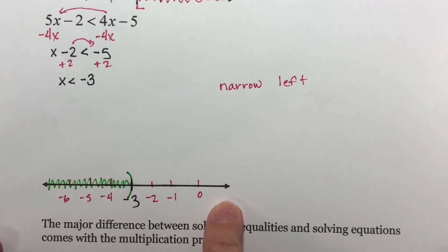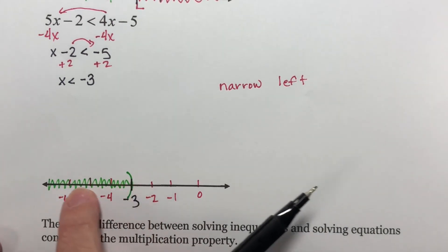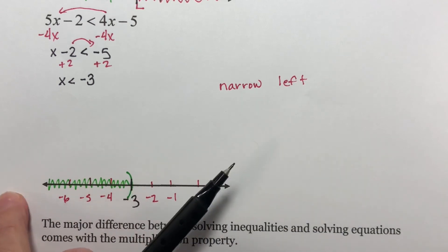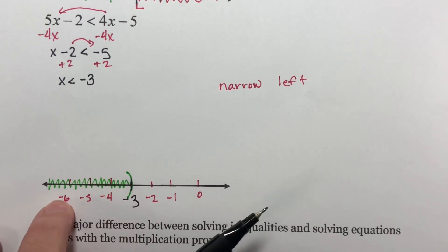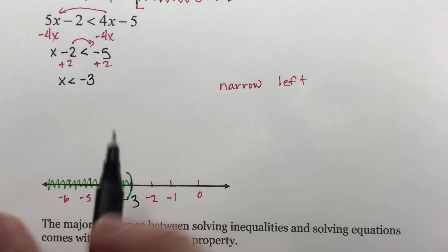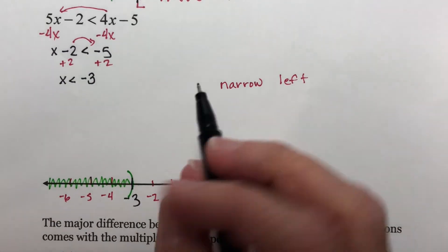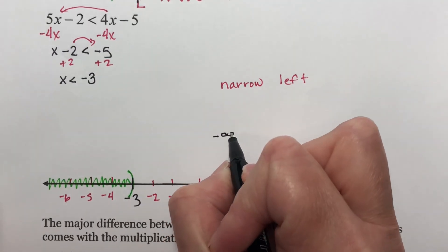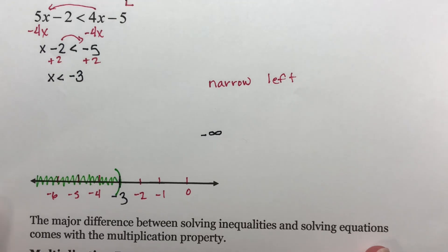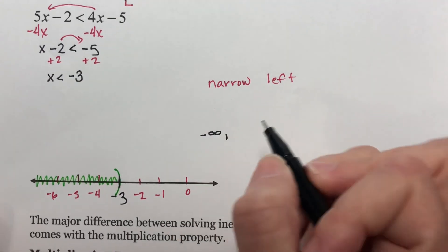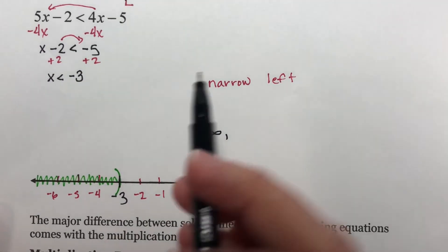For interval notation, it's always your left-hand boundary and then your right-hand boundary. Where does this start off? It goes all the way off here to infinity in this direction, in the negative direction. So I start off with a negative infinity as my left-hand boundary. My right-hand boundary, it goes all the way up to a negative 3.